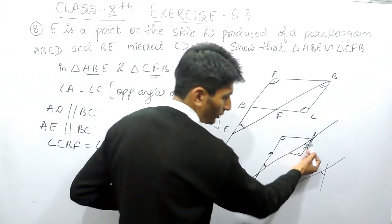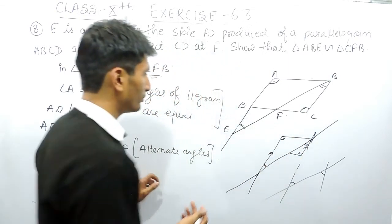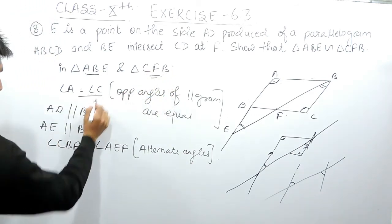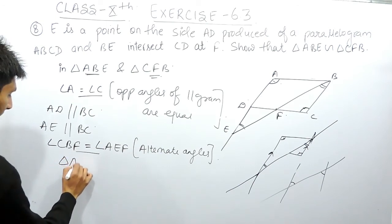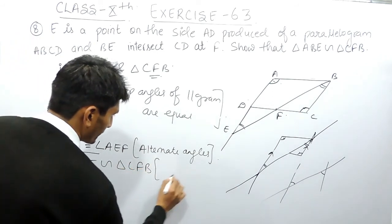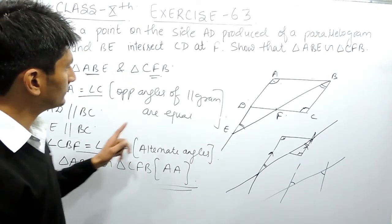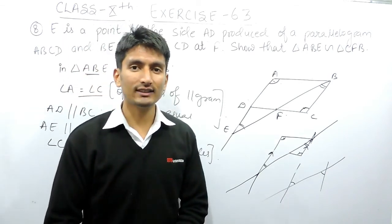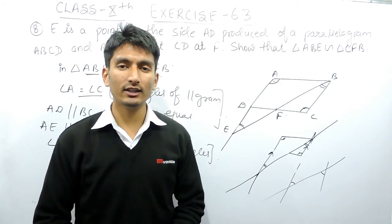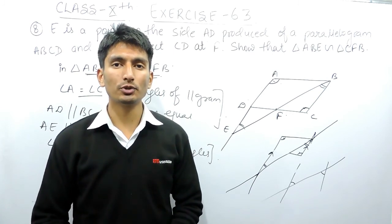So in the smaller triangle these two angles are equal to these two angles in the bigger triangle. We have proved that two angles of triangle ABE are equal to two angles of triangle CFB. Therefore, triangle ABE is similar to triangle CFB by the Angle-Angle (AA) similarity property. If you like this video, please subscribe to our channel. For any problem in maths, our phone number, email address, and WhatsApp number are given below in the description. Thank you.